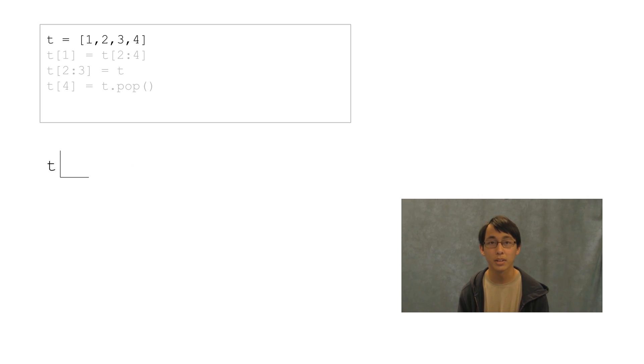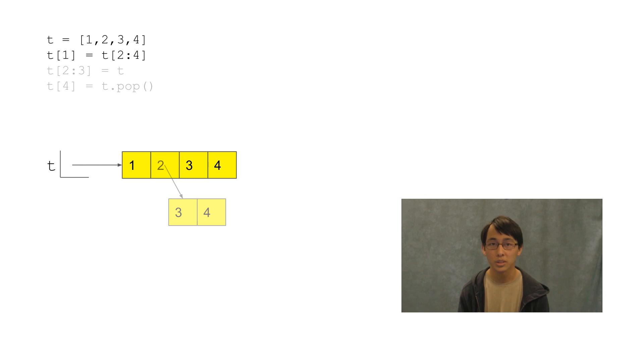Our last question looks like this. First off, we have t, and it points to a list that has 1, 2, 3, and 4. And it looks like we're going to be changing it up a bit. First off, we're going to be changing the first element with what looks like to be a copy of t from the second element up to but not including the fourth element. So it looks like this. Alright, good so far.